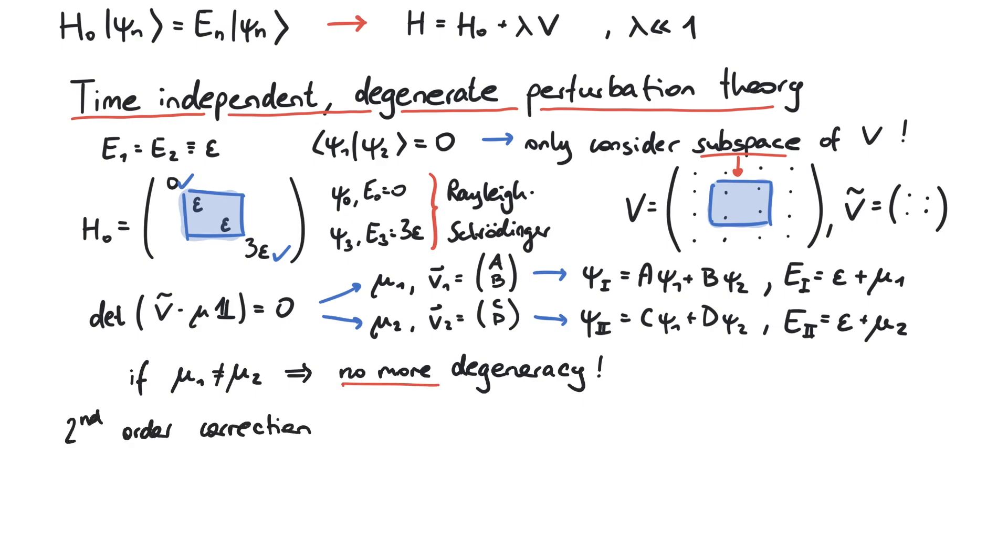The second order correction to the energy works similar to the non-degenerate case. However, now we exclude both the state 1 and 2 in the summation.